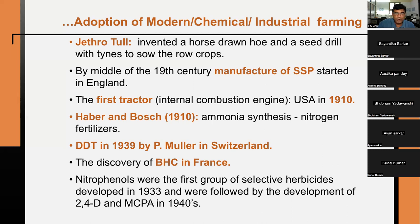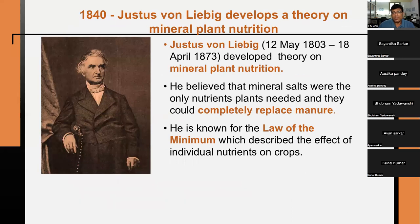During 1840, Justus von Liebig gave the theory of mineral plant nutrition. He believed mineral salts were the only nutrients plants needed and could completely replace manure. He also propounded the law of minimum, and his contributions in plant nutrition included discussions on balanced nutrition and nitrogen and phosphorus application to crops.